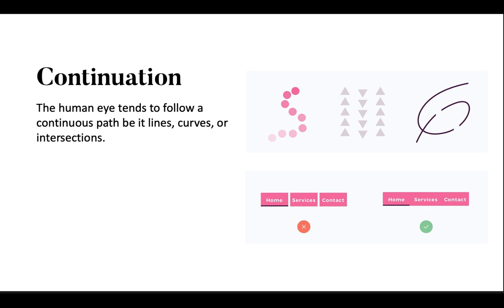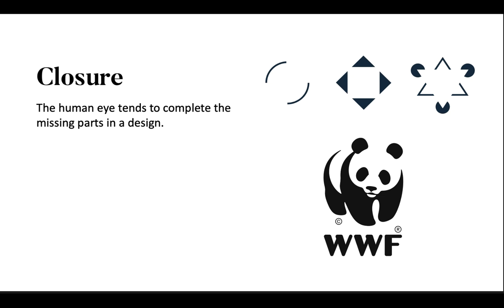Closure principle states that the human eye tends to complete the missing part in a design. Objects are often perceived as a whole thing, even when they are incomplete. Our mind quickly fills in the gaps and helps us find meaning and intention of a particular design. The other usage of closure is negative space. We see it in logos and iconography where designers utilize your mind to fill in the gaps of a design.